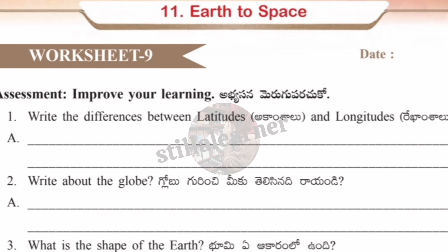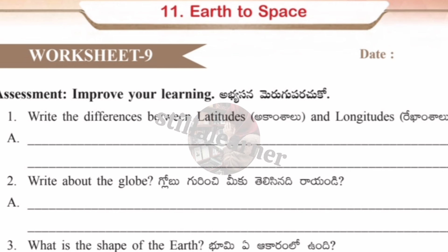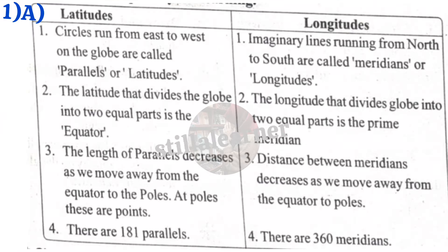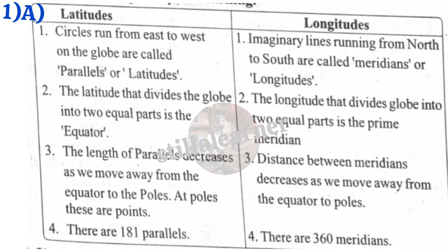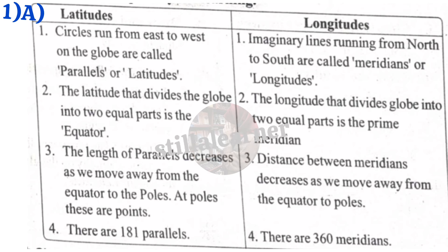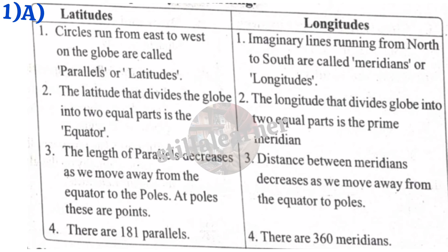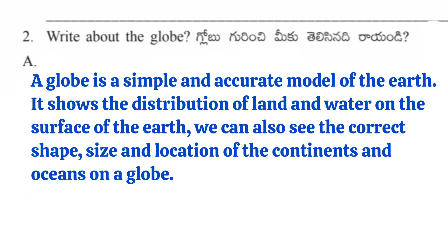Worksheet number nine: write the differences between latitudes and longitudes. Each has four points. Read the box carefully and write it down. Next, write about the globe: A globe is a simple and accurate model of the earth. It shows the distribution of land and water on the surface of the earth.